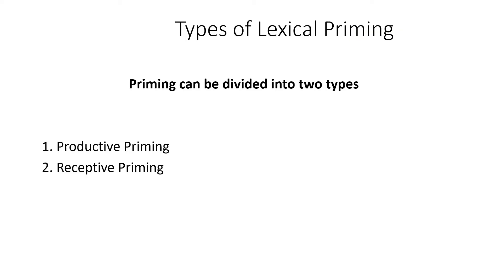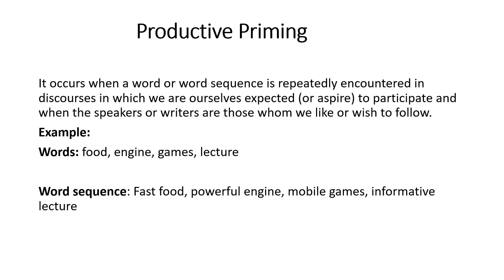There are two types of flexible priming: productive priming and receptive priming. Productive priming is easy to master. It occurs when a word or word sequence is repeatedly encountered in discourses or interactions in which we ourselves want to participate — contexts and environments that we enjoy and like, with speakers or writers whom we wish to follow.